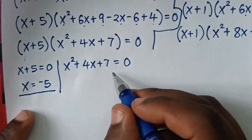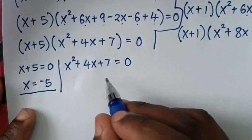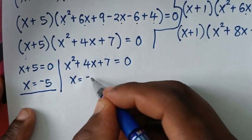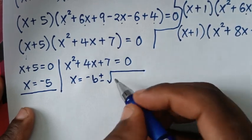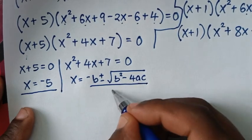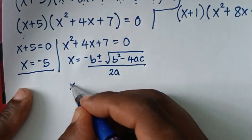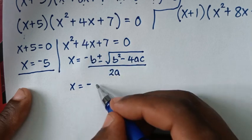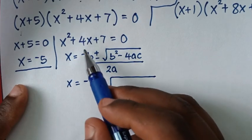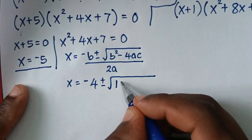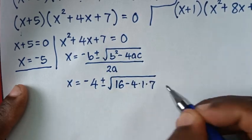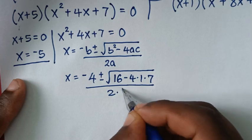From the quadratic x² + 4x + 7 = 0, we use the quadratic formula: x = (−b ± √(b² − 4ac)) / 2a. So x = −4 ± √(4² − 4 × 1 × 7) / (2 × 1), which is −4 ± √(16 − 28) over 2.